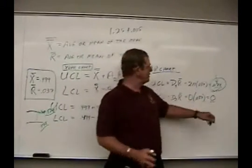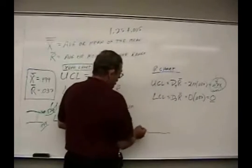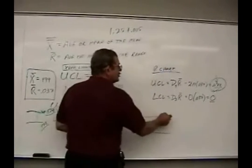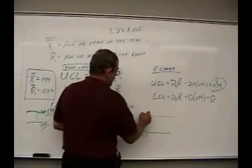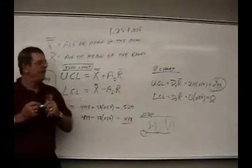Of course, you wouldn't have a minus 0. There'd be no such thing. So, your range chart would be 0 here and should not have a range greater than 0.078. So, the parts got to stay in between there.